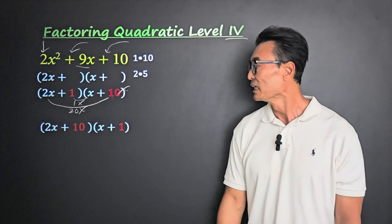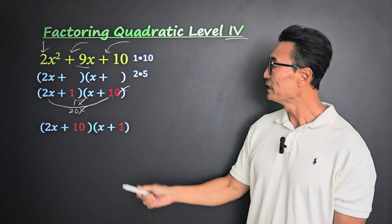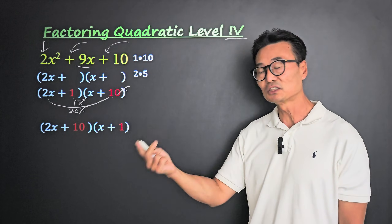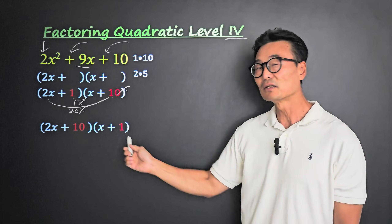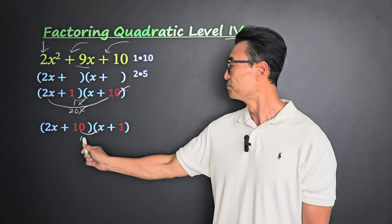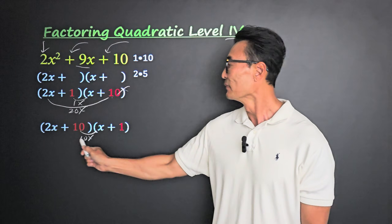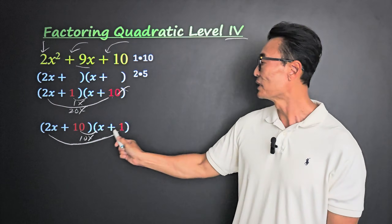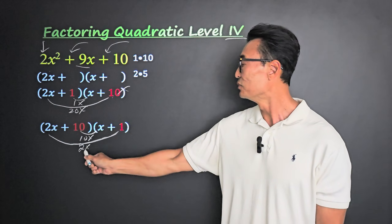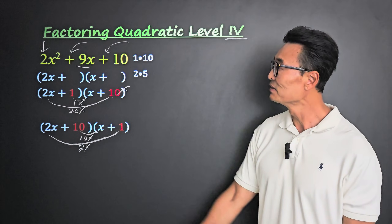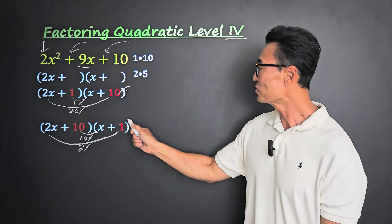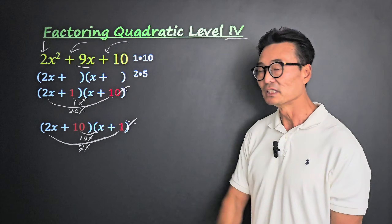Let's try switching to 10 and 1. The inner product gives 10x, and the outer product 2 times 1 is 2x. Adding 10 and 2 gives 12x — not the 9x we want. So that's not it either.